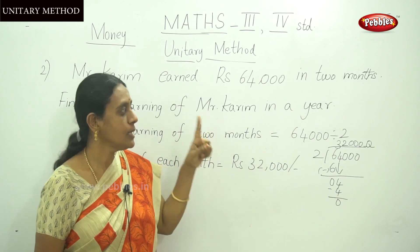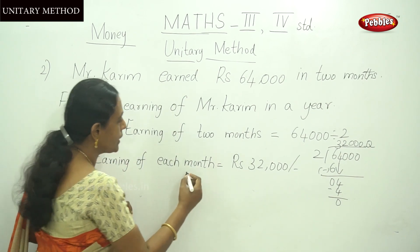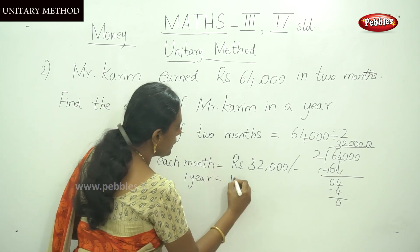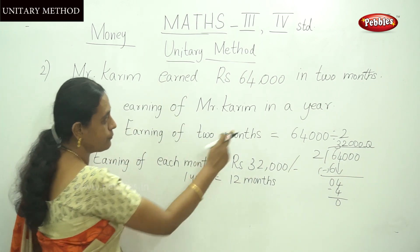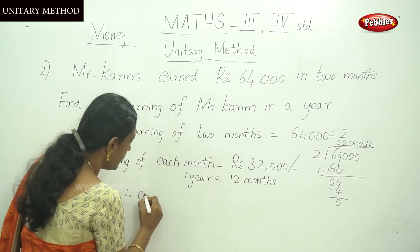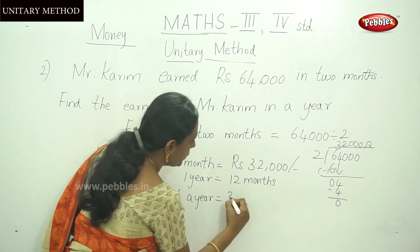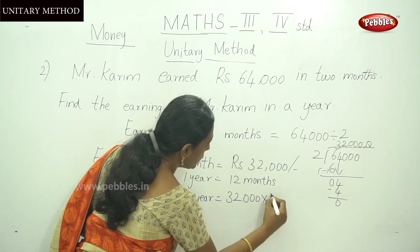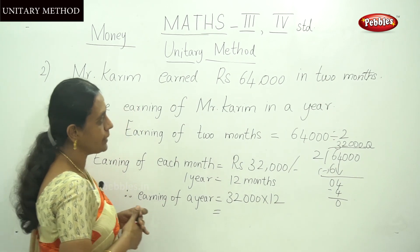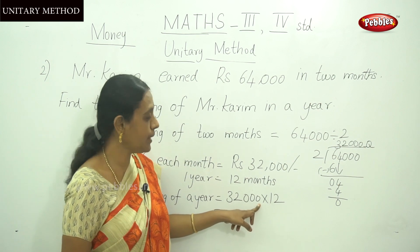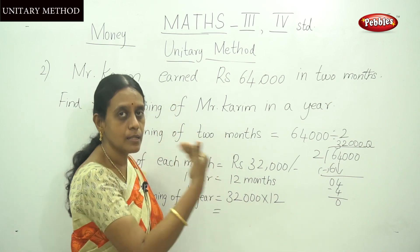One year equals 12 months. Earning of a year equals 32,000 multiplied by 12. In our multiplication topic, we discussed the technique for zero-ending numbers: multiply the non-zero digits, then append the zeros to the right side of the product.